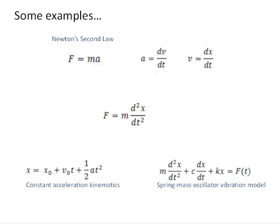Here are some examples you should be familiar with from physics. Newton's second law is a simple mathematical model relating force, mass, and acceleration. If we combine that with definitions of acceleration and velocity, we can come up with another statement of Newton's second law. In the first case, F equals ma, we have a simple algebraic relationship between acceleration, mass, and force. In the second example, we have F equals m times the second derivative of x (position) with respect to time, and that is now a simple differential equation.